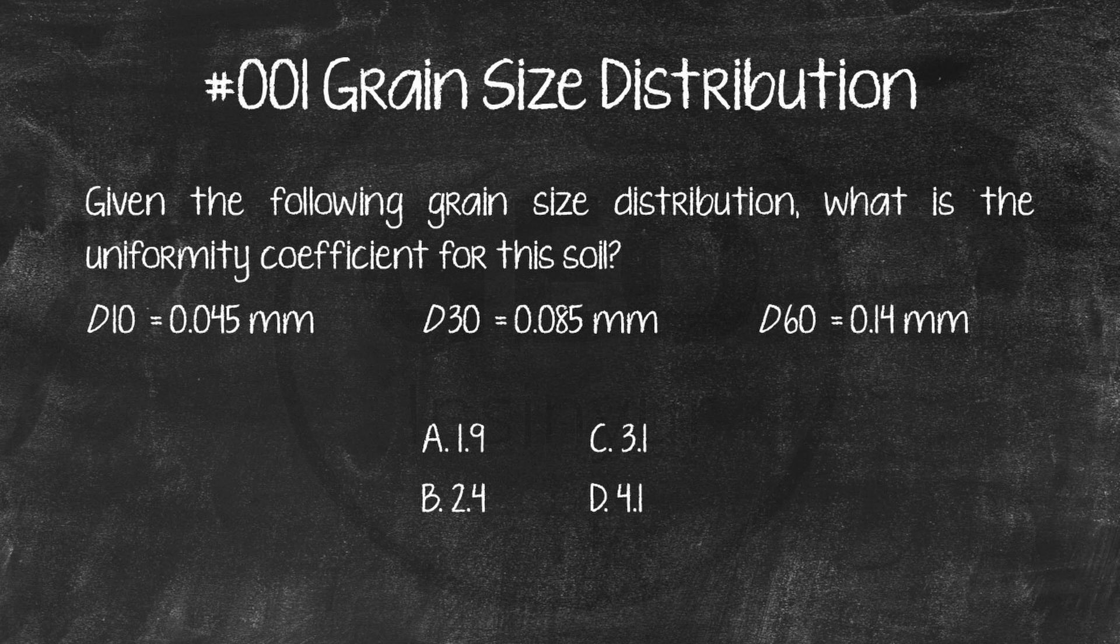Solution. The uniformity coefficient Cu is D60 divided by D10. The answer is C, 3.1.